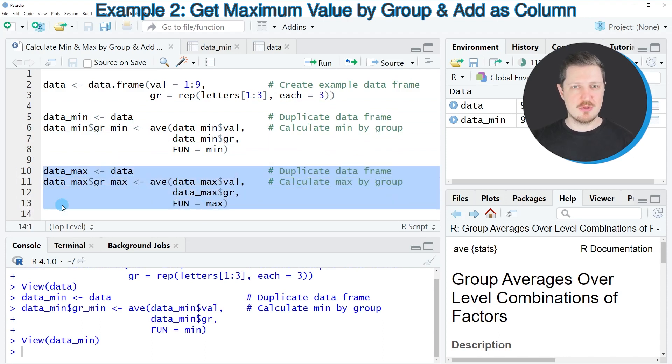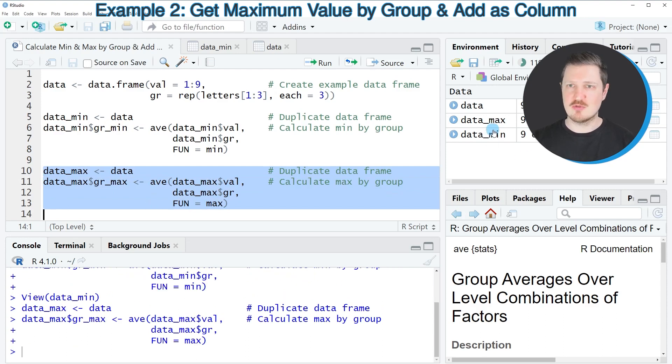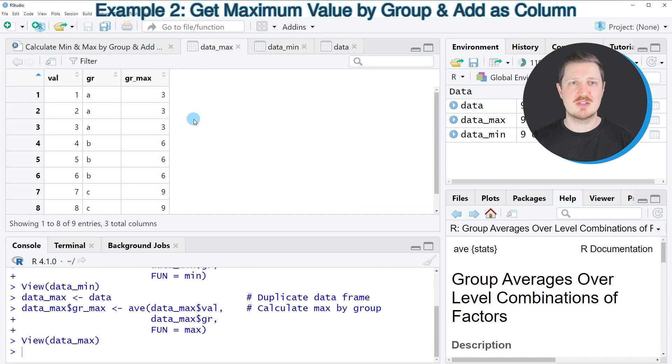So after running lines 10 to 13 of the code another data frame called data_max is appearing at the top right and if you click on this data frame another window is opened which is showing our new data frame containing the maximum values. And as you can see we have added another column called grmax and this column contains the maximum values by groups.